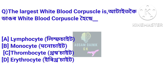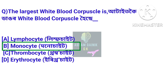The largest white blood corpuscle is? Atait koi dangor white blood corpuscle hoi se. Answer: monocyte. Monocyte hoi atait koi dangor white blood corpuscle.